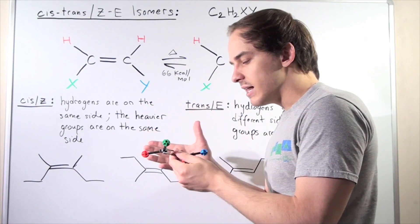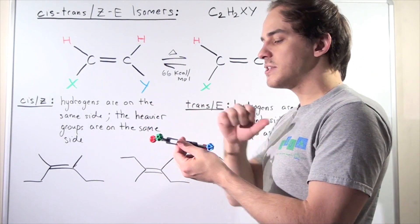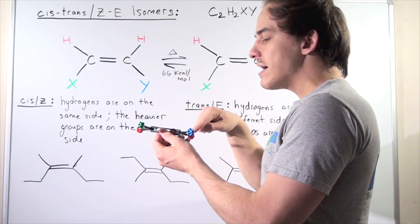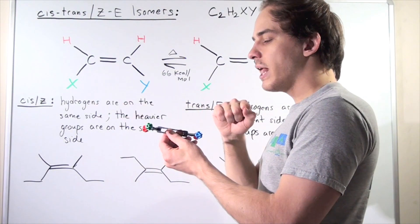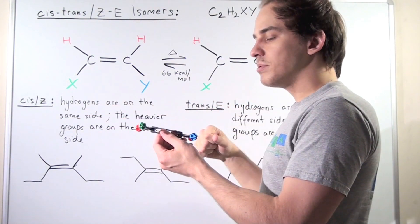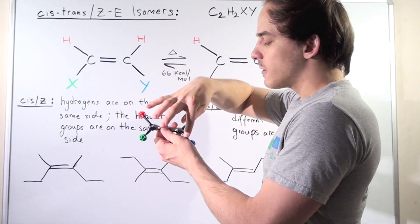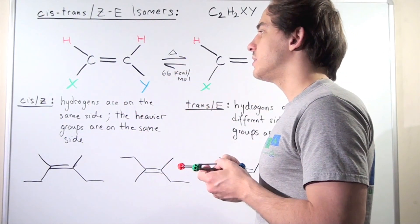Now, one important detail about the structure of alkenes is that they have planar symmetry. In other words, all these four atoms are found on the same exact plane. So if this was the XY plane, all these four atoms would be on the same plane, and these four bonds are also on the same plane.